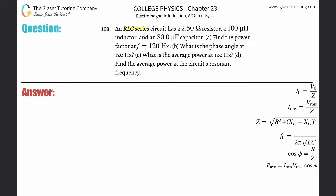Number 103: an RLC series circuit has a 2.5 ohm resistor, a 100 microhenry inductor, and an 80 microfarad capacitor. Part (a): find the power factor at a frequency of 120 Hz. Check out number 101 — we actually calculated something we need for this problem. The power factor is cosine of the phase angle phi, equal to the resistance divided by the impedance.